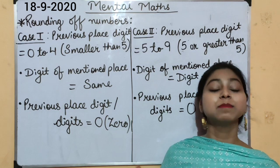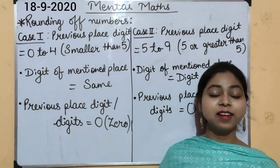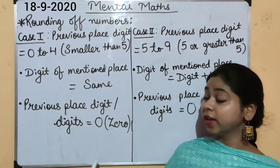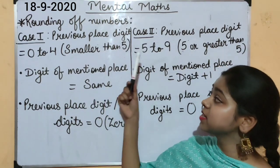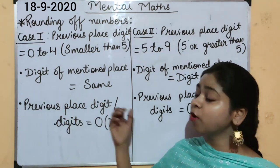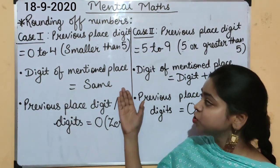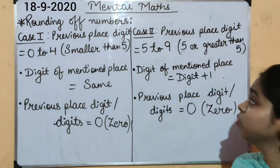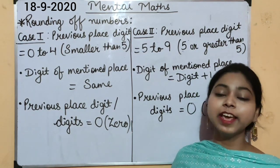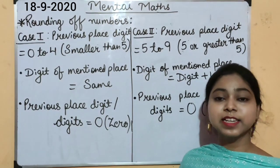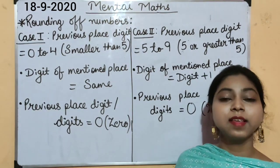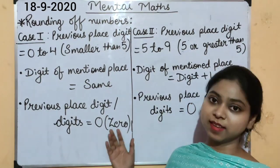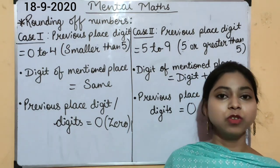While rounding numbers, you need to follow some steps. Step 1: check the digit at the given place, then check the digit at the previous place. You will come across two cases. Case 1: if the previous place digit is smaller than 5 (i.e., 0 to 4), the digit at the mentioned place will remain the same and the previous place digits will become 0. Case 2: if the previous place digit is 5 or more (i.e., 5 to 9), the digit at the mentioned place will become digit plus 1 (the successor), and the previous place digits will become 0. Learn these two cases properly to solve various questions.